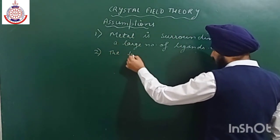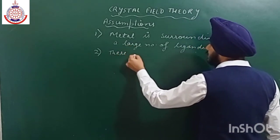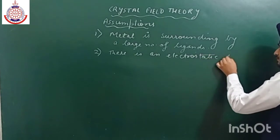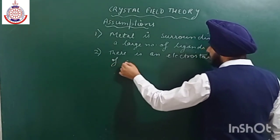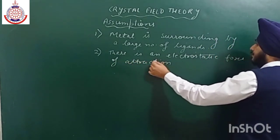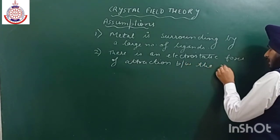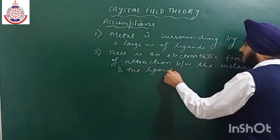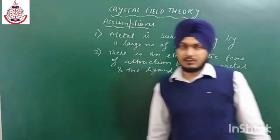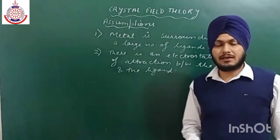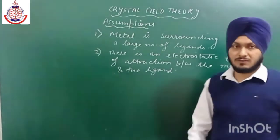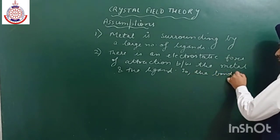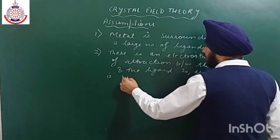The second assumption is that there is an electrostatic force of attraction — an electrostatic interaction — between the metal and the ligand. According to Crystal Field Theory, in contrast with Valence Bond Theory, the interaction between the metal atom and the ligand is purely ionic. The bonding is purely ionic according to this theory.